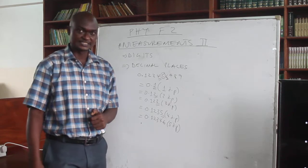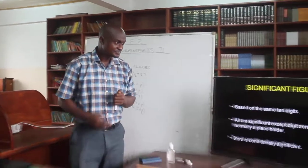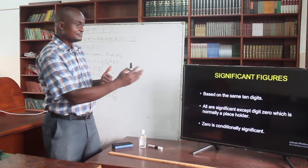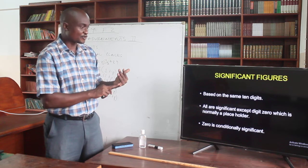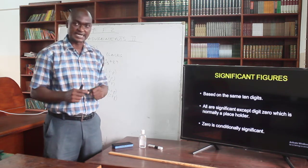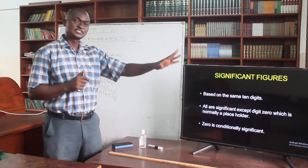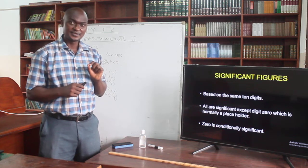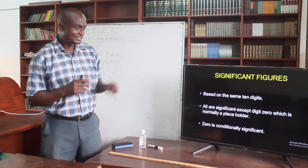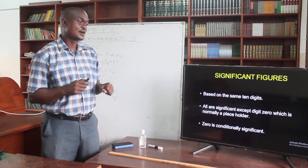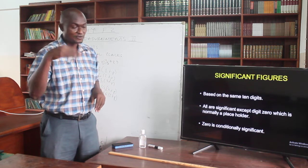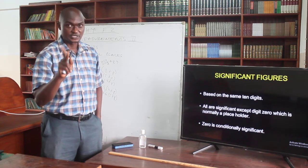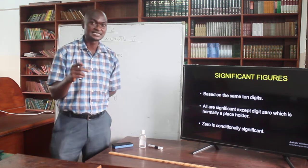That's about decimal places and computation. What about significant figures? When you're writing numbers in significant figures, it is based on the same ten digits we've been talking about: zero, one, two, three, four, five, six, seven, eight, and nine. All of those digits are significant except zero. Zero is not significant — it is only written as a placeholder. However, zero becomes significant under specific conditions.